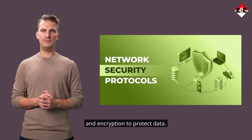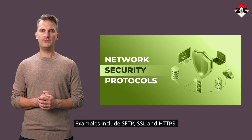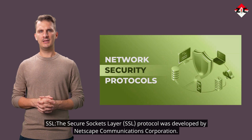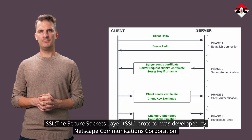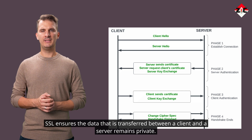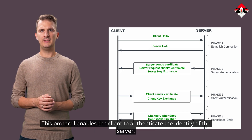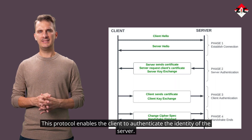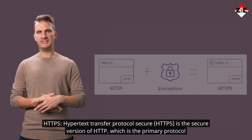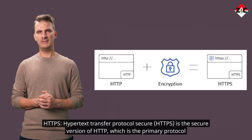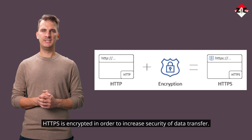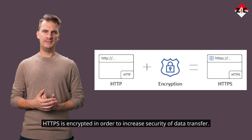Network security protocols use security measures such as cryptography and encryption to protect data. Examples include SFTP, SSL, and HTTPS. SSL — the Secure Sockets Layer protocol — was developed by Netscape Communications Corporation. SSL ensures that data transferred between a client and a server remains private, and enables the client to authenticate the identity of the server. HTTPS — Hypertext Transfer Protocol Secure — is the secure version of HTTP, the primary protocol used to send data between a web browser and a website. HTTPS is encrypted in order to increase the security of data transfer.